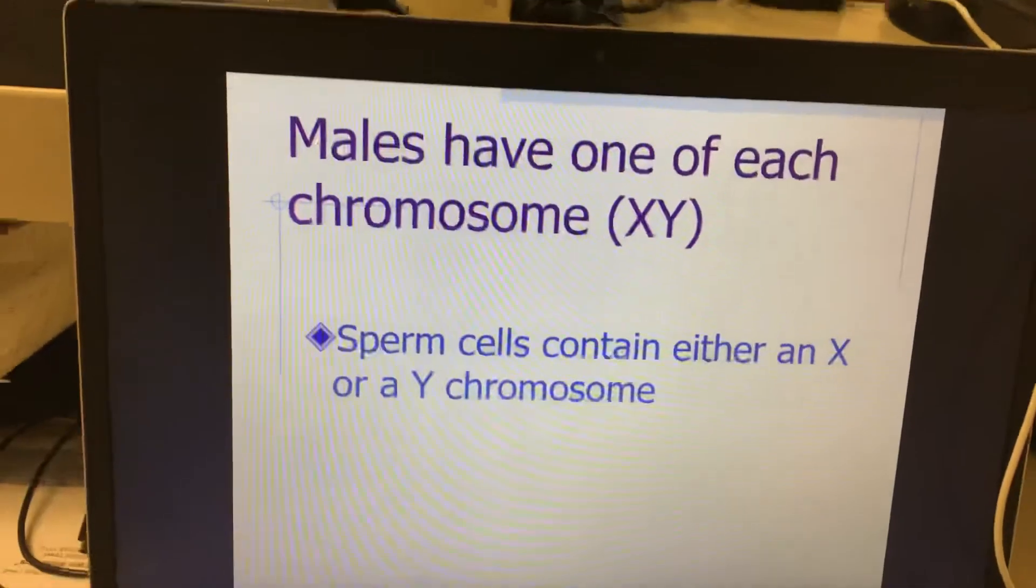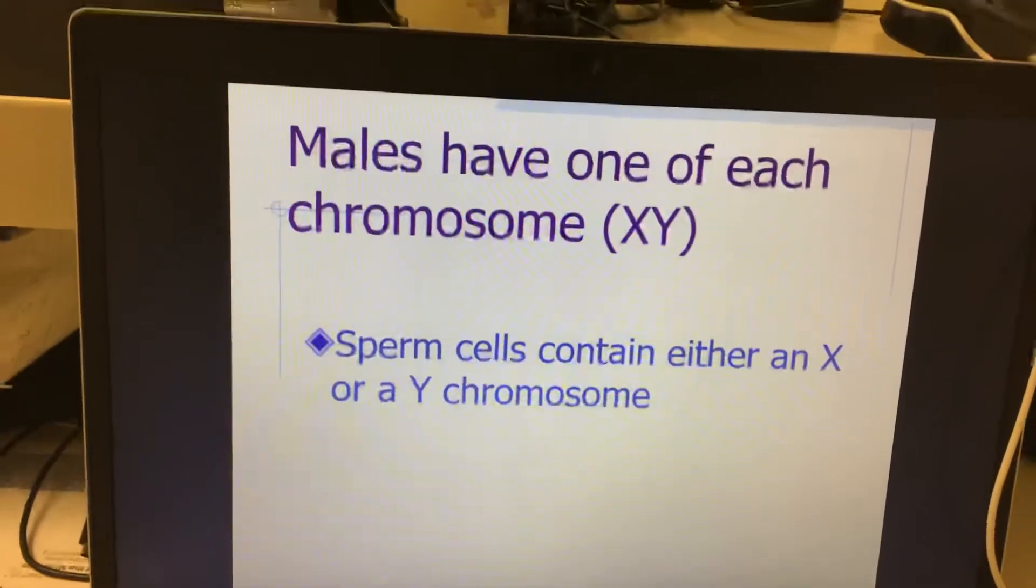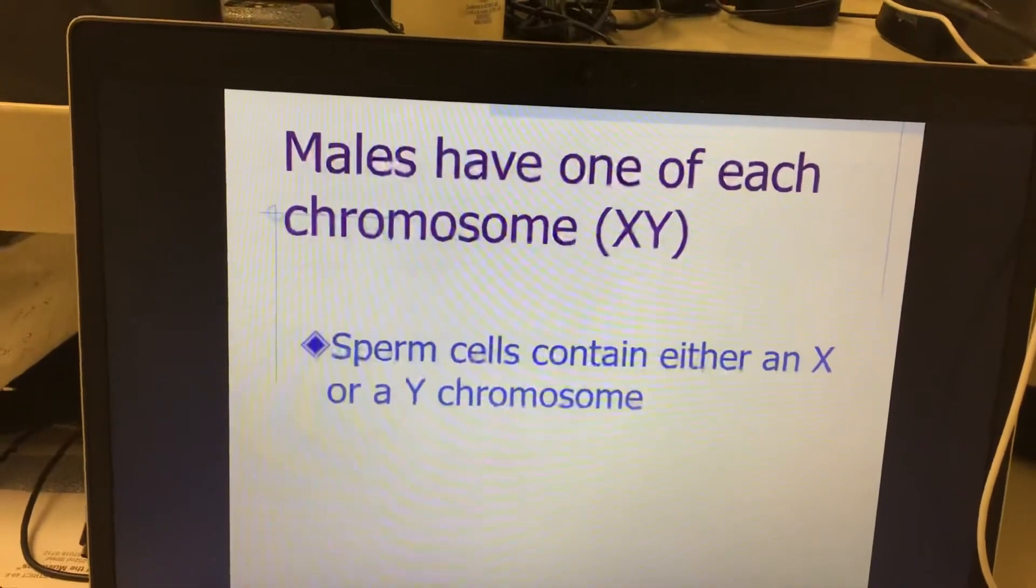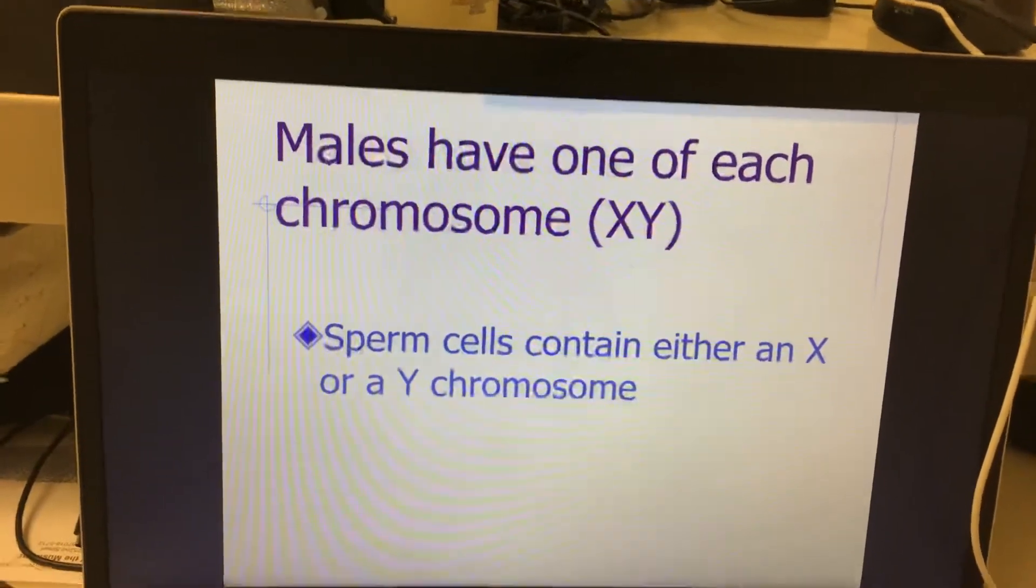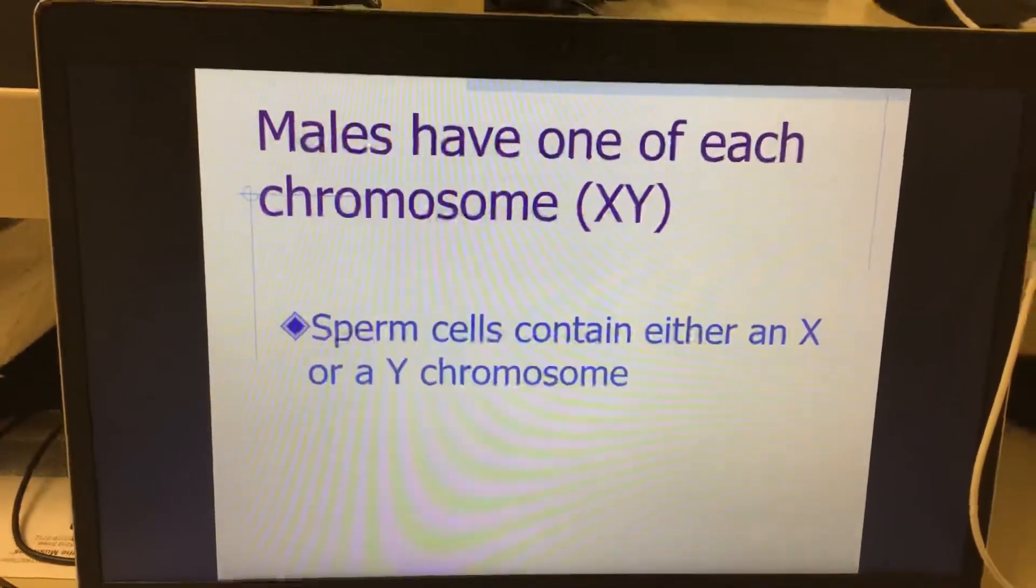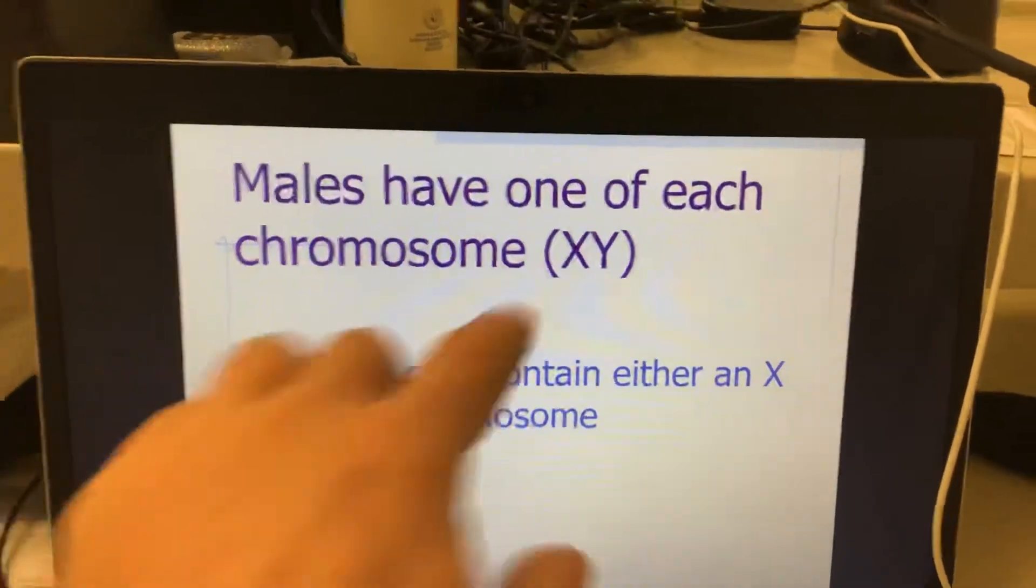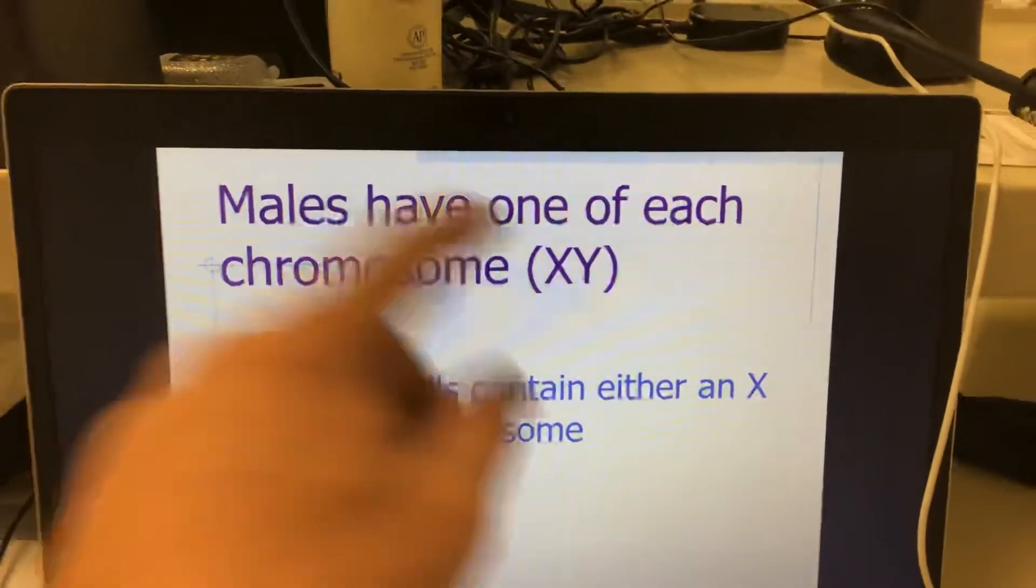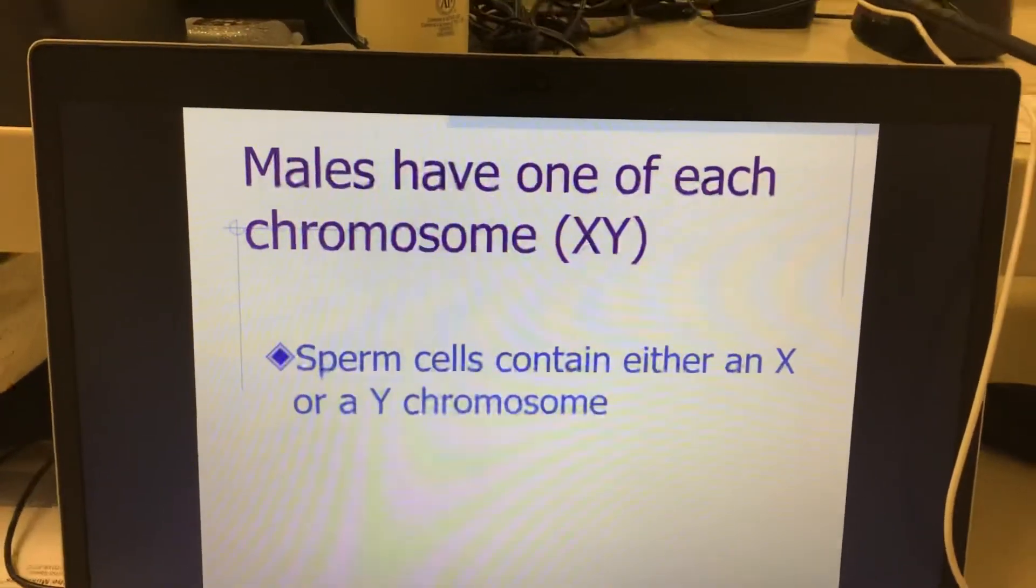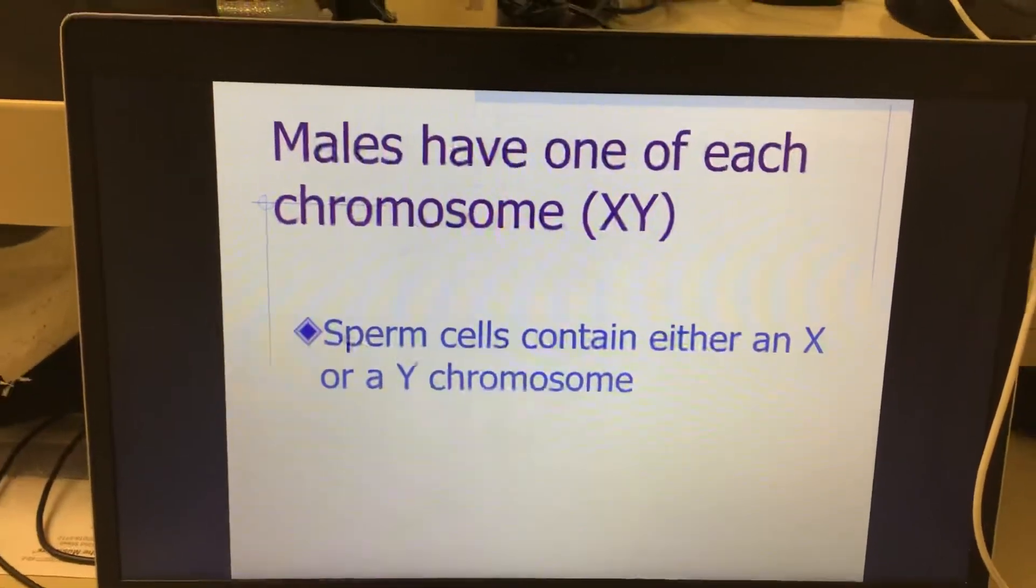Males have one of each, an X and a Y. Sperm can either have an X or a Y chromosome. A female's egg is going to be X and a male's sperm can be X or Y. You got X from mom. Now you're either going to get a sperm with an X on it, and if that's the case, then you are a girl. If you get a sperm that's a Y chromosome, then you're going to be a boy. Males are going to determine the sex of the offspring.